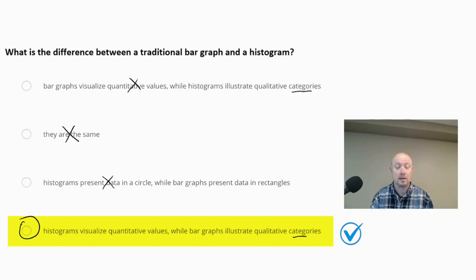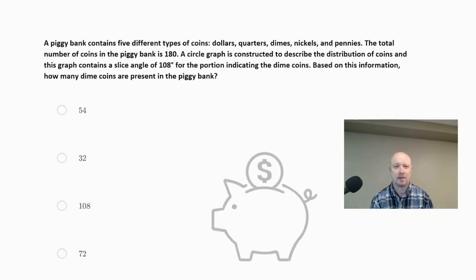A piggy bank contains five different types of coins: dollars, quarters, dimes, nickels, and pennies. The total number of coins in the piggy bank is 180. A circle graph is constructed to describe the distribution of coins, and this graph contains a slice angle of 108 degrees for the portion indicating the dime coins. Based on this information, how many dime coins are present in the piggy bank? Is it 54, 32, 108, or 72?